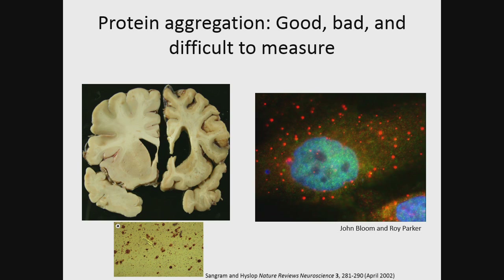On the other hand, aggregation is the basis for a number of beneficial cellular functions. For instance, here I'm showing RNP granules, which are a form of protein aggregation. We've also seen protein aggregation implicated in other cellular pathways like the human immune system and also in memory.